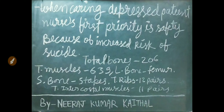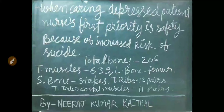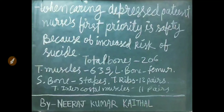When caring for a depressed patient, the nurse's first priority is safety because of the increased risk of suicide. In our body: total bones 206, total muscles 339, longest bone — femur, smallest bone — stapes, total ribs — 12 pairs, total intercostal muscles — 11 pairs.